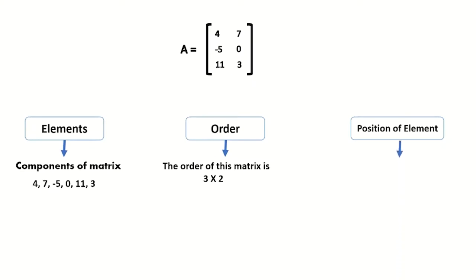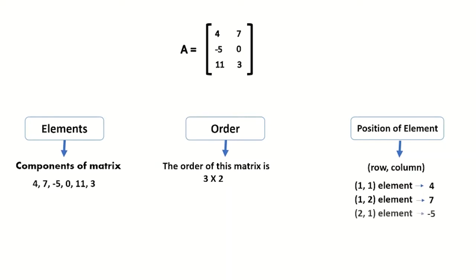Every element in a matrix has a unique position. We define the position of an element by looking at the row and column in which it is placed. From matrix A: the element at row 1, column 1 is 4; row 1, column 2 is 7; row 2, column 1 is minus 5; row 2, column 2 is 0; row 3, column 1 is 11; and row 3, column 2 is 3.